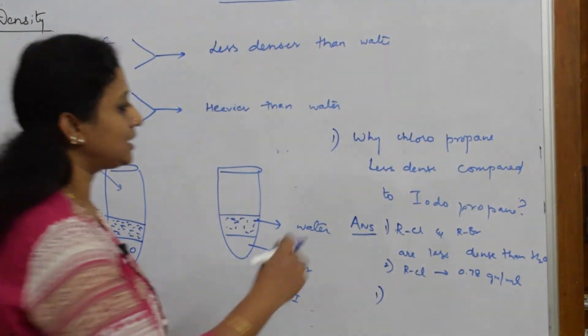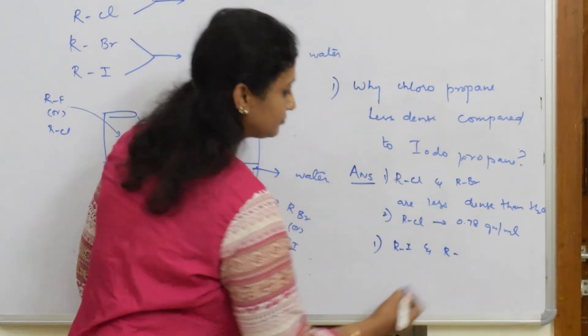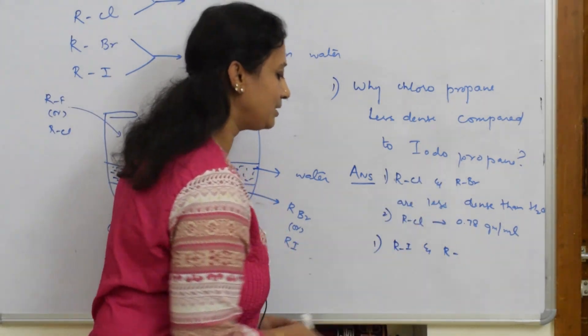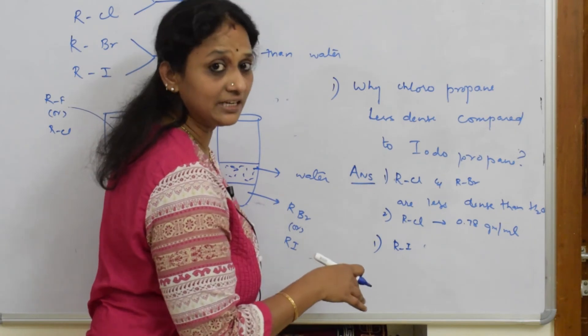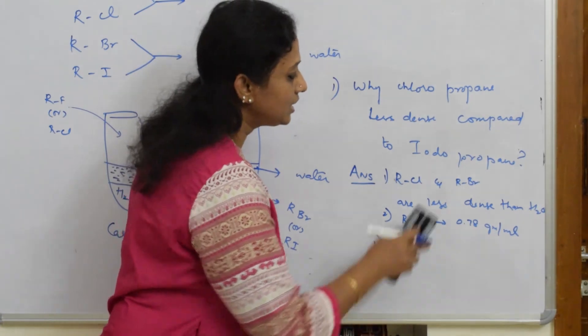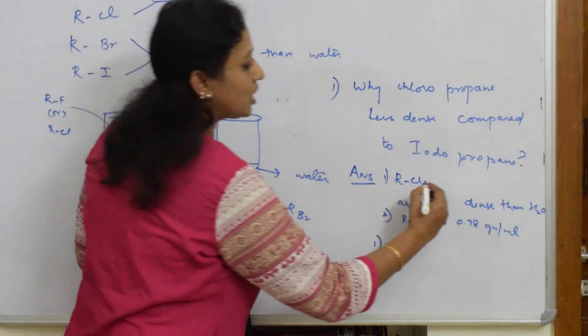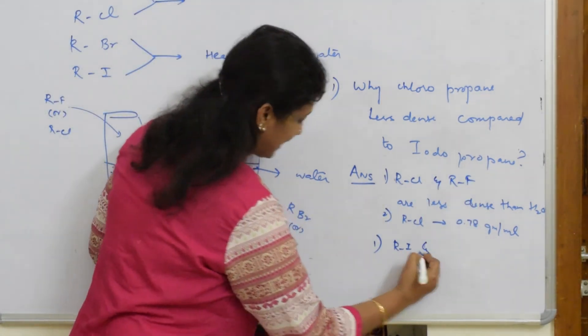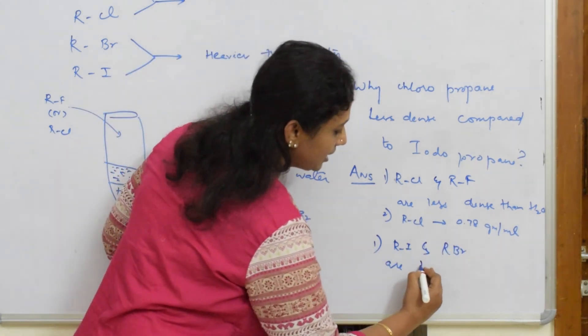R-I is heavier in nature. One small mistake I made here - R-Br and R-I, both compounds are heavier than water. Be very careful: R-Cl and R-F are less dense than water, while R-I and R-Br are heavier than water.